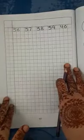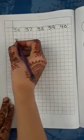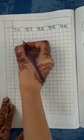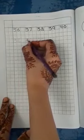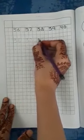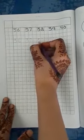Now open page number 97. Write with me. 3-6-36, 3-7-37, 3-8-38.